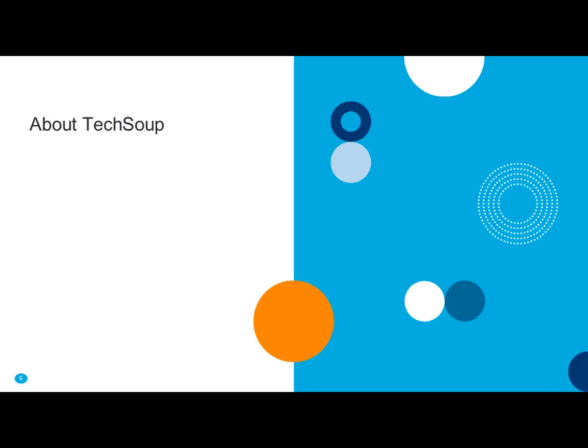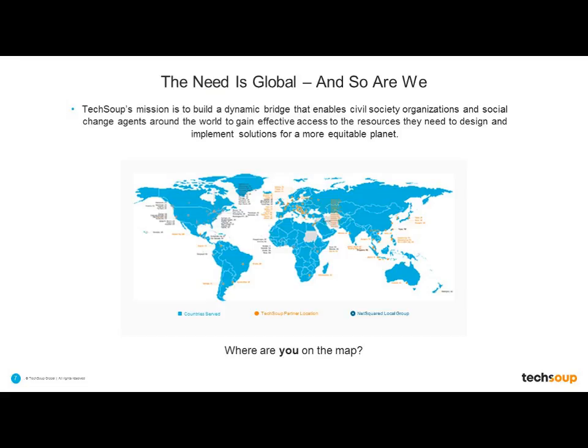Before we dive in, I want to give a quick overview of TechSoup for those who may not already be familiar with us. We are everywhere on this map that's blue, helping to build a dynamic bridge that enables social do-gooders around the world to access the technology, resources, and information they need to design and implement solutions for a more equitable planet. Go ahead and chat in to let us know where you are joining us from.